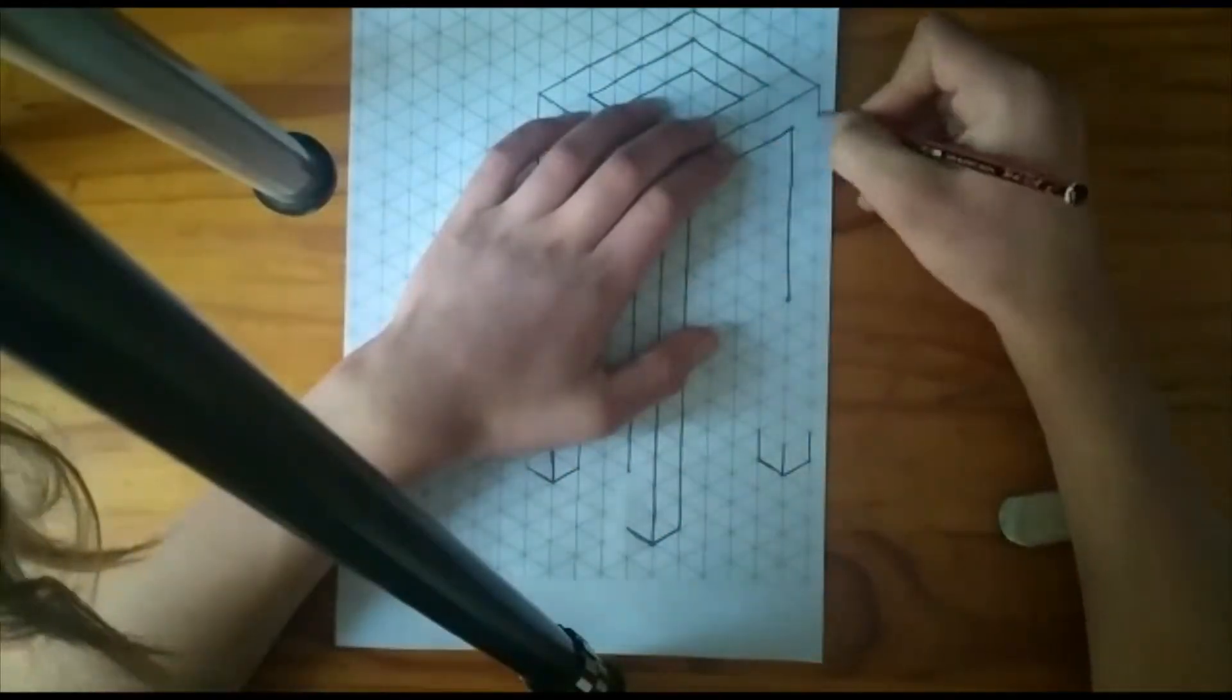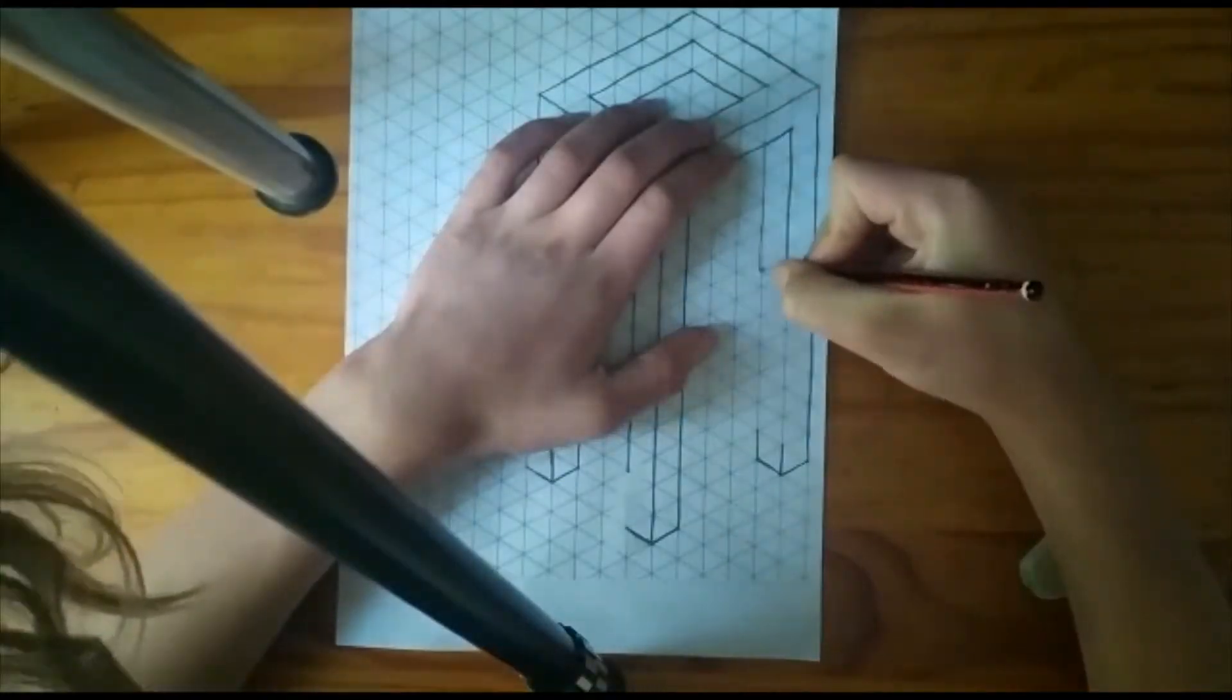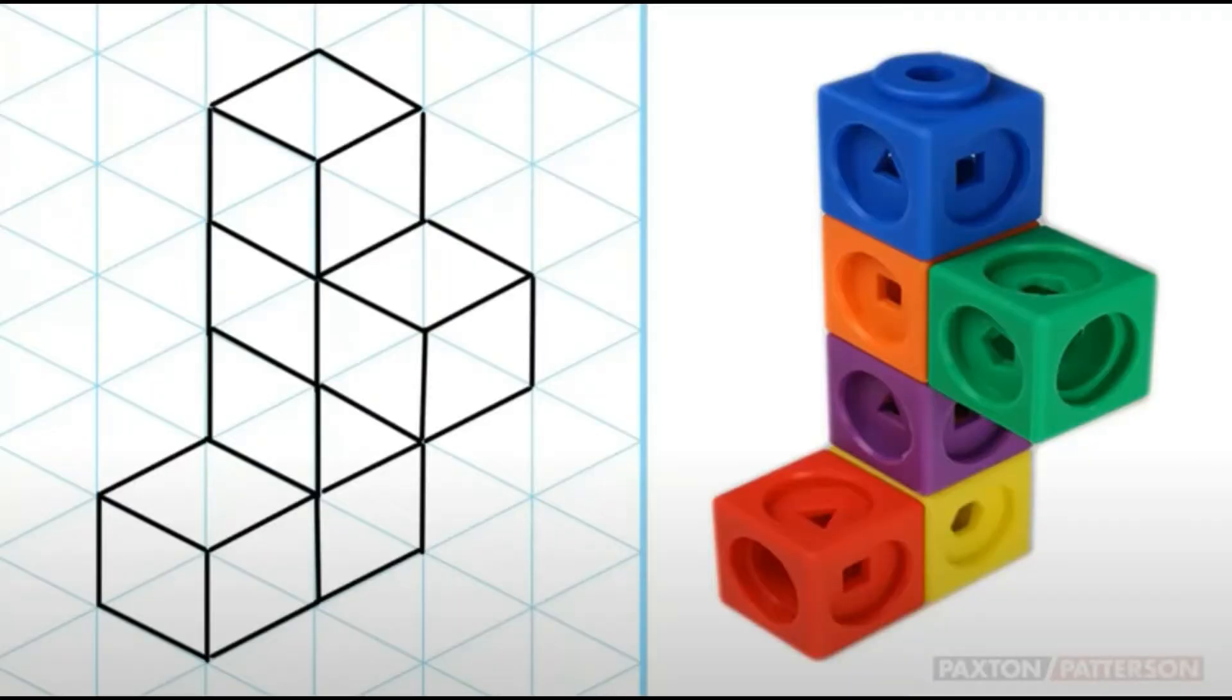This technique only requires one view to represent an object. Here is an example of a very simple object drawn in the isometric perspective.